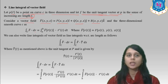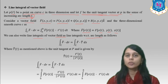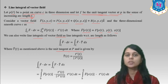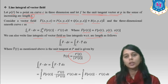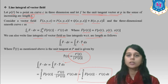The integral of F-bar · dR-bar equals the integral from a to b of F-bar(R-bar(t)) · R-bar′(t) dt, where F-bar(R(t)) = (x(t), y(t), z(t)). We can also write this line integral in the vector field with respect to arc length as F-bar · T-hat ds, where T-hat = R-bar′(t) / |R-bar′(t)|. Substituting gives R-bar′(t) dt as the element.